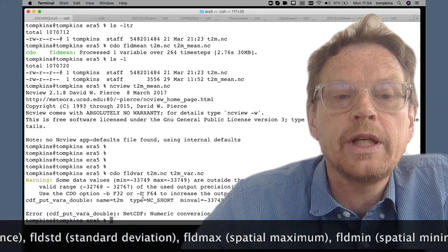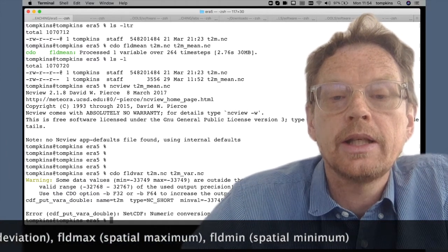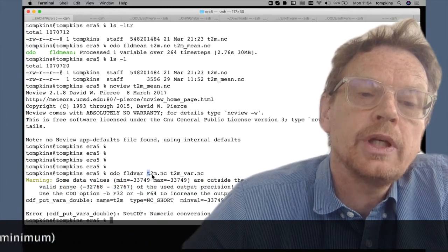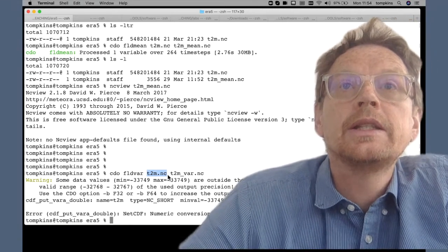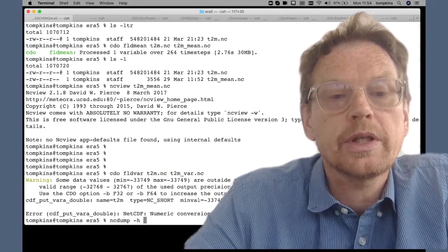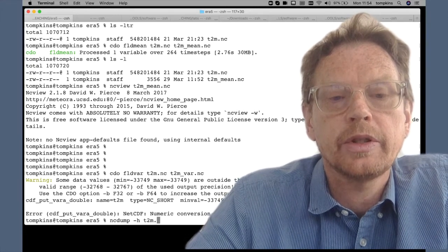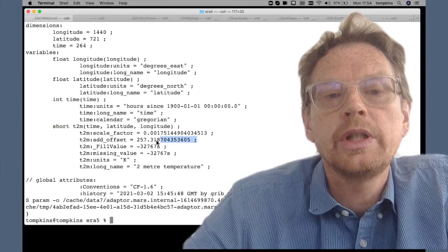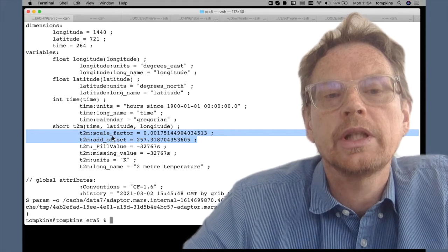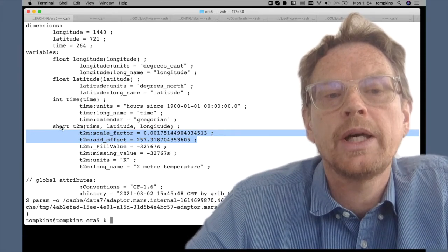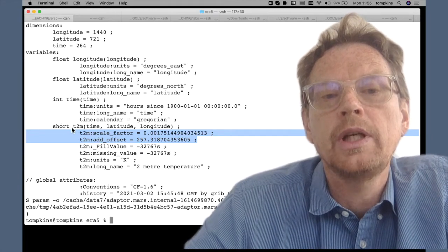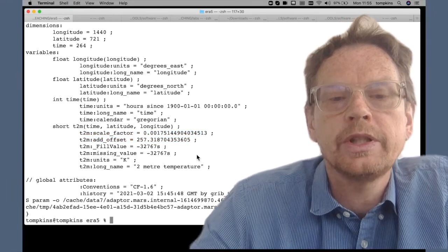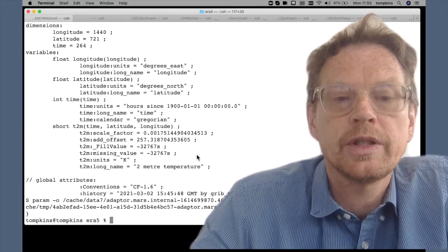Now we have an error. The reason why we have this error as we can see here is that there is a problem with the precision and that's because the data that's stored and actually passed from the climate data store is in a compact form. If we look at the file using ncdump T2M dot nc we see that it's not actually a floating point but it's stored as a short which needs to be unpacked using a scale factor and an offset. In other words we multiply the integer value stored here by this scale factor and then add the offset to get the full value output. Now the problem is when CDO tries to make a calculation sometimes it runs into problems with precision.